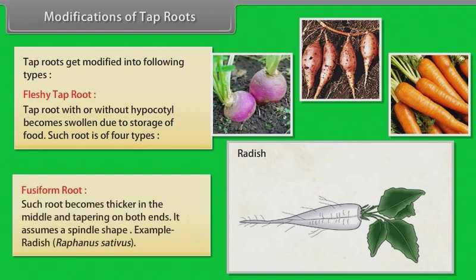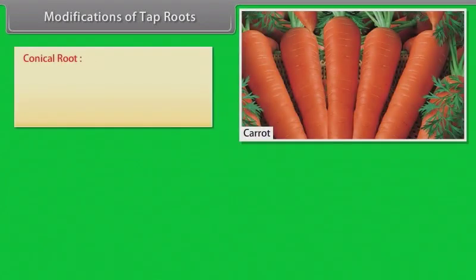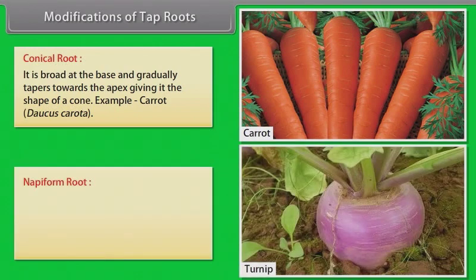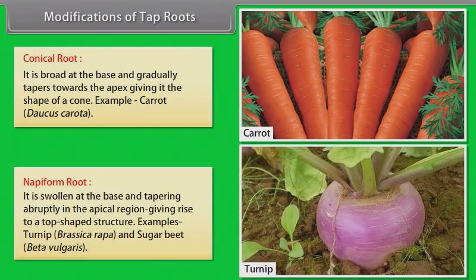Fusiform root: becomes thicker in the middle and tapering on both ends, assuming a spindle shape. Example: radish (Raphanus sativus). Conical root: broad at the base and gradually tapering towards the apex, giving it the shape of a cone. Example: carrot. Napiform root: swollen at the base and tapering abruptly in the apical region, giving rise to a top-shaped structure. Examples: turnip (Brassica rapa) and sugar beet (Beta vulgaris).